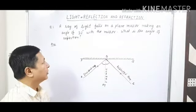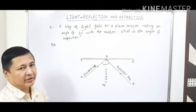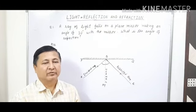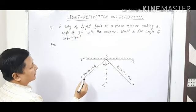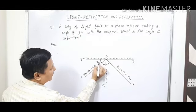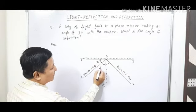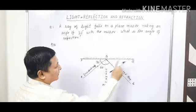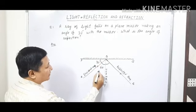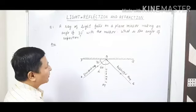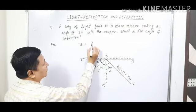Let us take one question based on the laws of reflection. A ray of light falls on a plane mirror making an angle of 30 degrees with the mirror. What is the angle of reflection? Most students answer that the angle of reflection is 30 degrees, but this is not correct. The incident ray makes 30 degrees with the plane mirror, so the angle of incidence — measured from the normal — will be 60 degrees, because the angle between the normal and the mirror is 90 degrees. So the angle of incidence is 60 degrees, and according to the laws of reflection, the angle of reflection is also equal to 60 degrees.